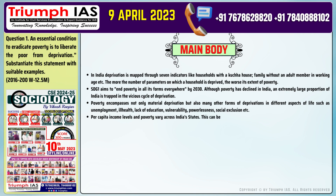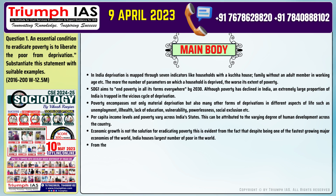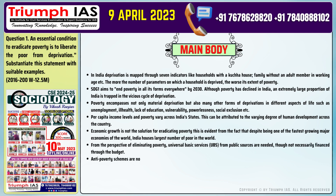Number four: Per capita income levels and poverty vary across Indian states, attributable to the varying degree of human development across the country. Number five: Economic growth is not the solution for eradicating poverty, as evidenced by India — one of the fastest-growing major economies — housing the largest number of poor in the world. Number six: Universal basic services (UBS) from public sources are needed, though not necessarily financed through the budget.